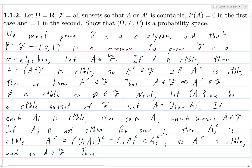Thus A is guaranteed to be in F regardless of whether all the A_i's are countable or some A_j is not countable. That confirms F is closed under countable unions, and hence F is a sigma-algebra.